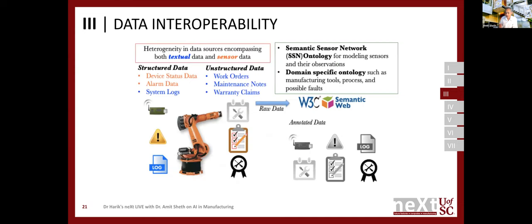There is a lot of data — both textual and sensor data. There are structured data like device status data, alarm data, and system logs, and unstructured data like work orders, maintenance notes, and warranty claims. You want to make this data interoperable. A fundamental approach to do that is to annotate the data — meaning to label the data. Similar to supervised machine learning where you label training data with a class, annotating sensor data makes it meaningful.